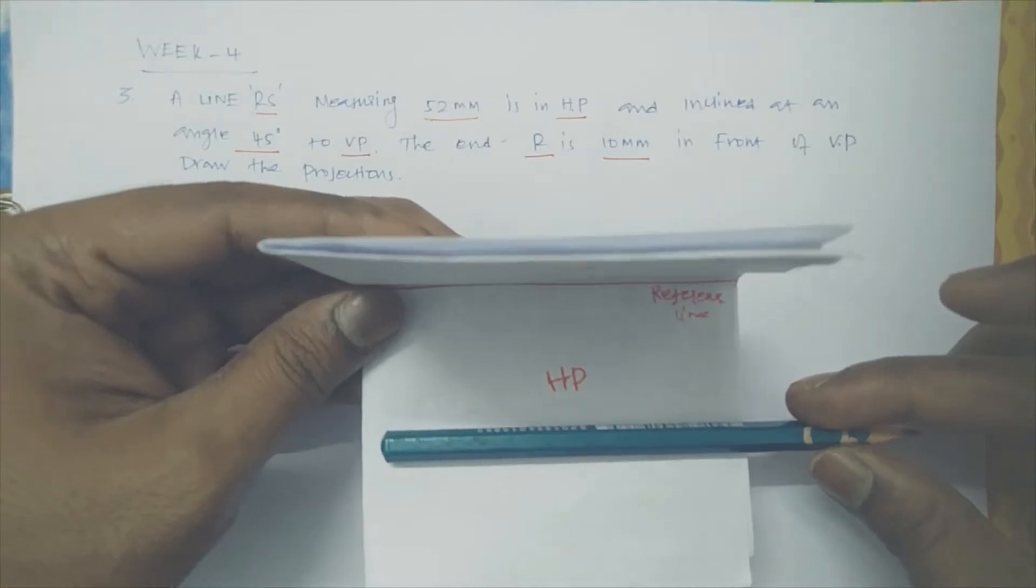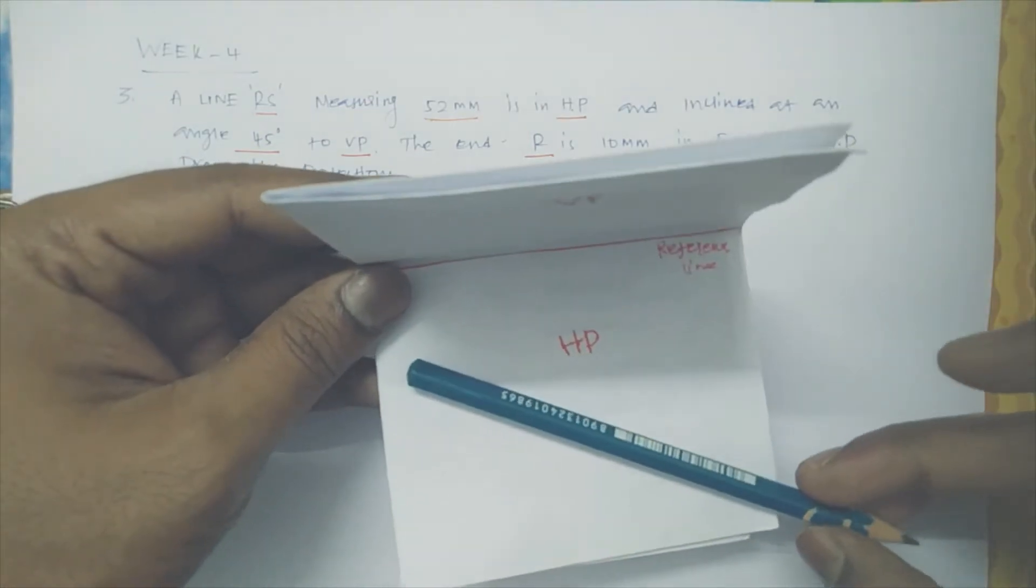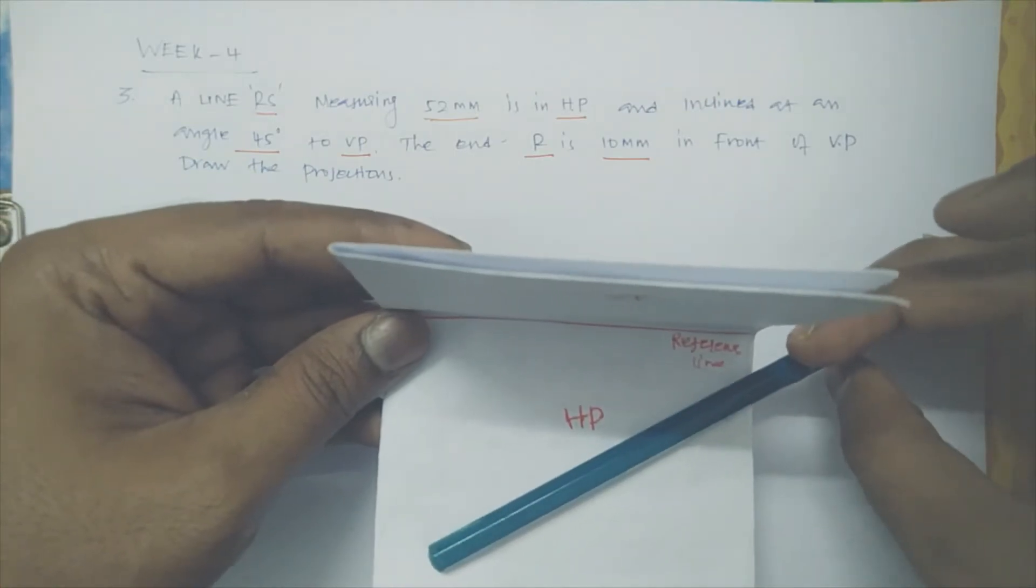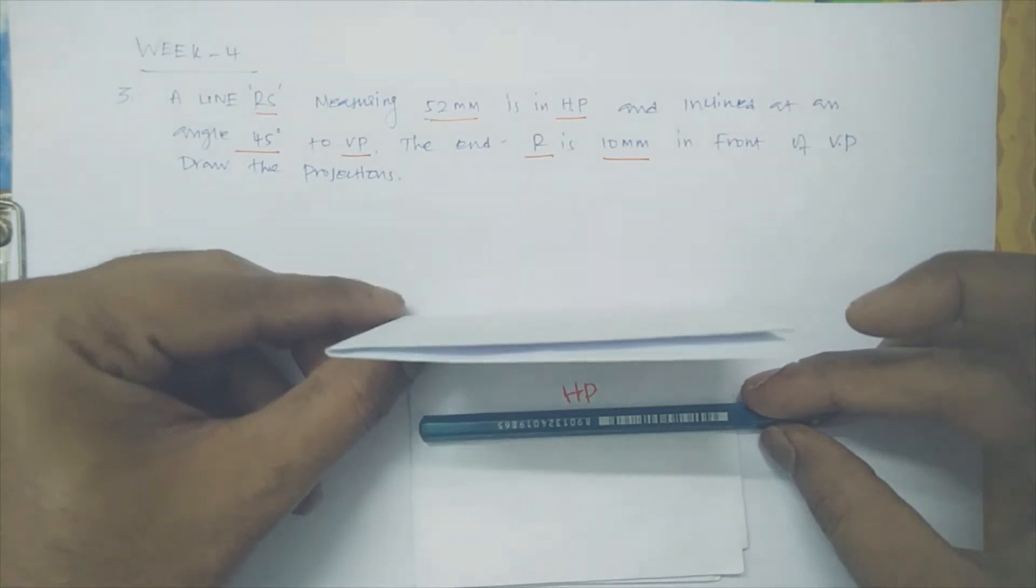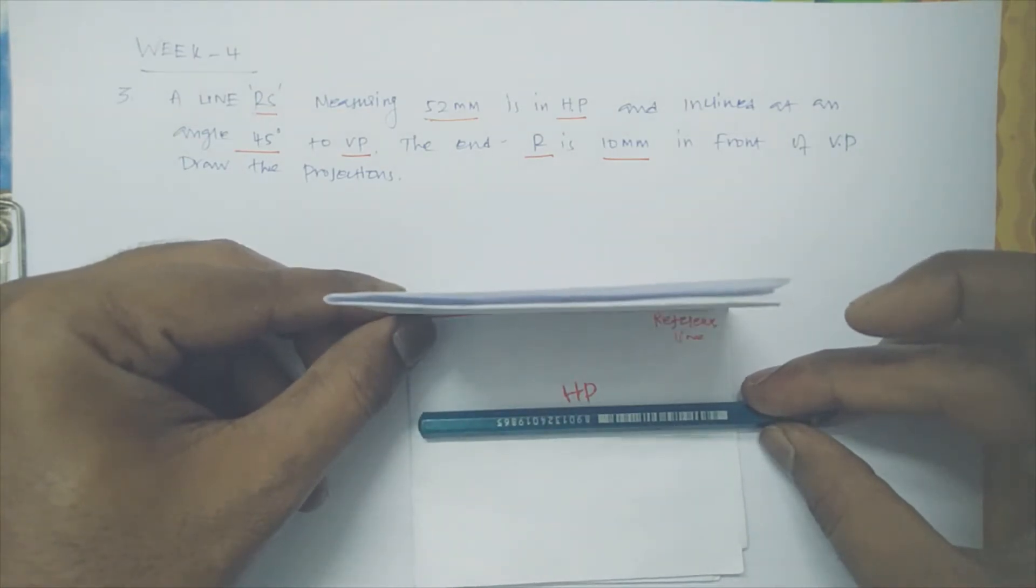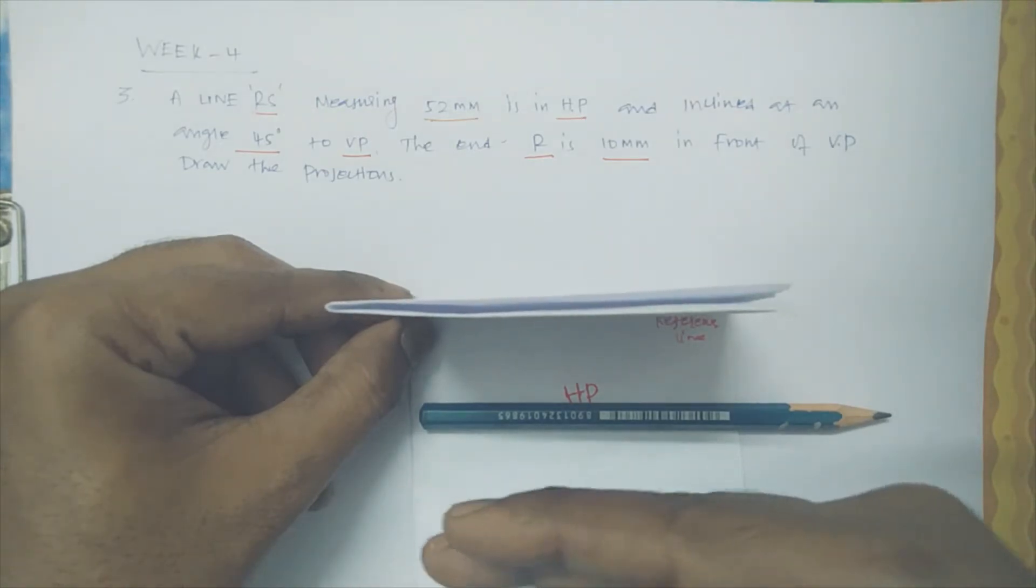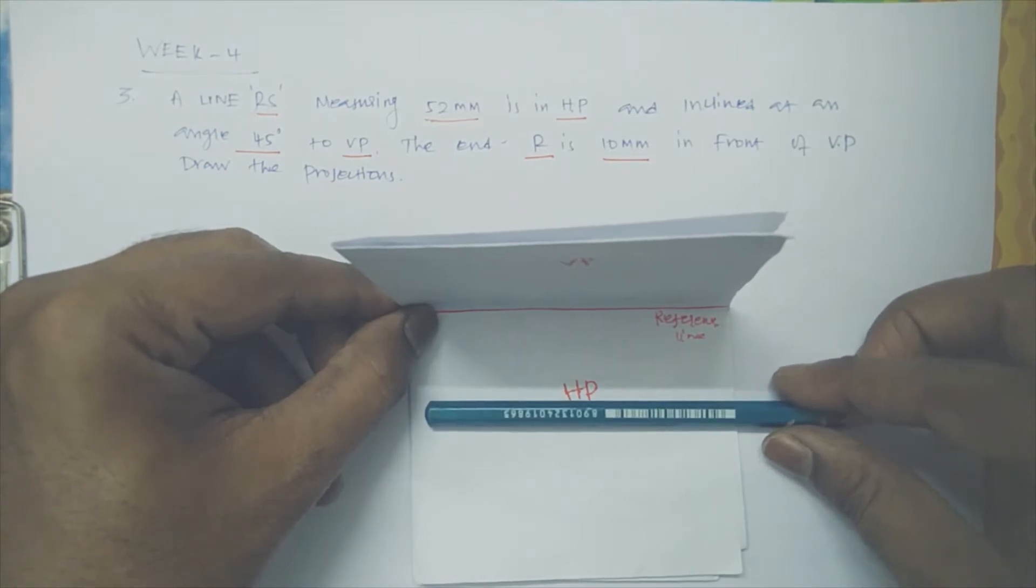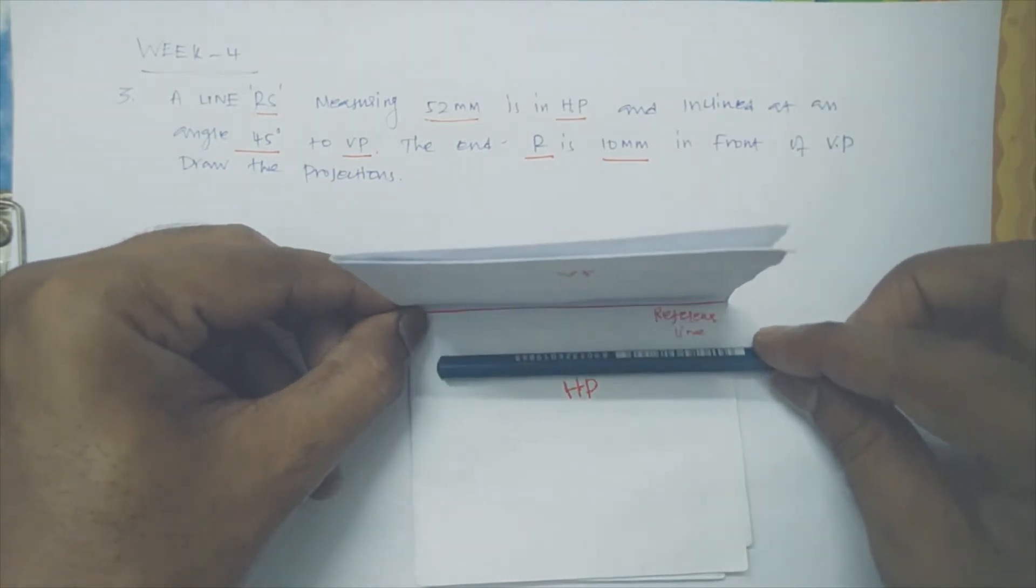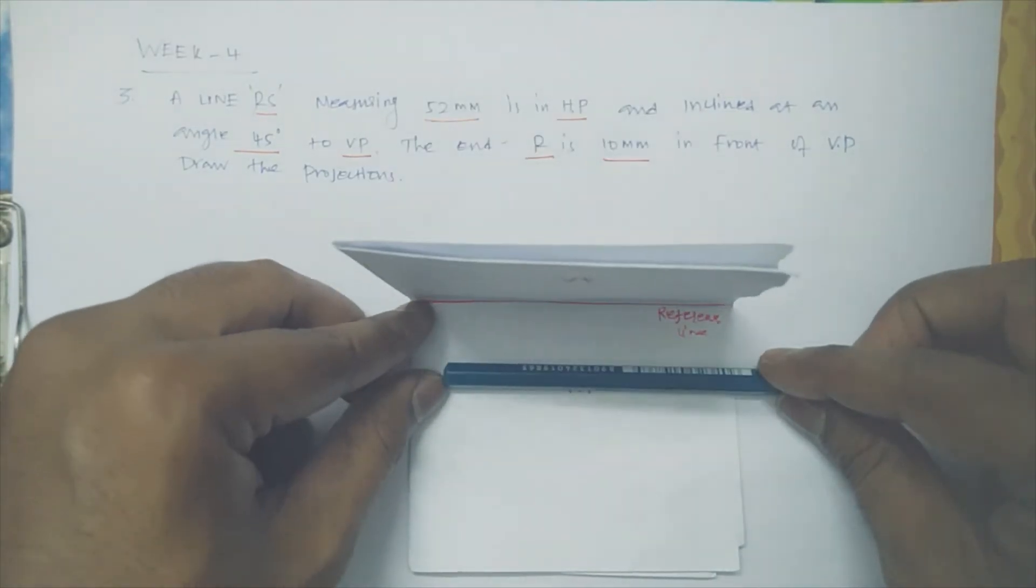So either you can rotate this side or this side, it is up to you. As per the book, I am making it to VP. This is also VP only. In this direction also VP only, this is also VP. And the end R is 10mm in front of VP. So 10mm, let us consider this is R, 10mm in front of VP.